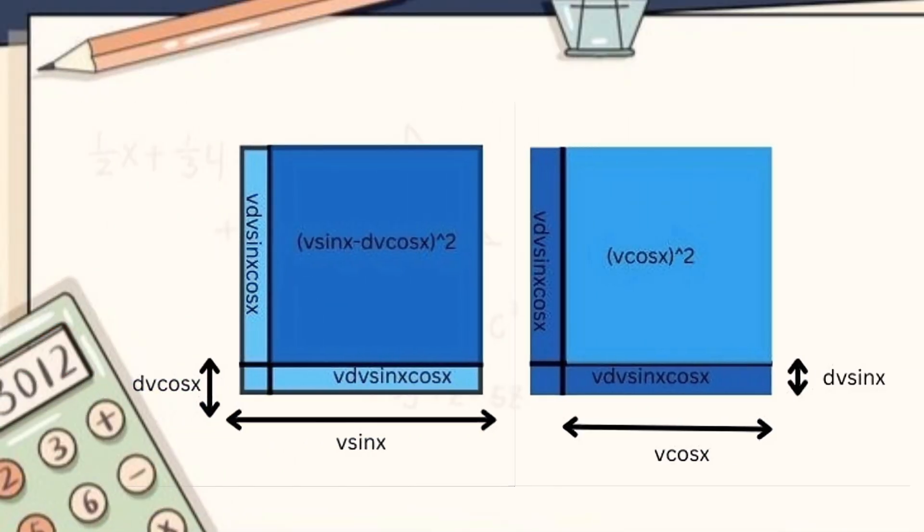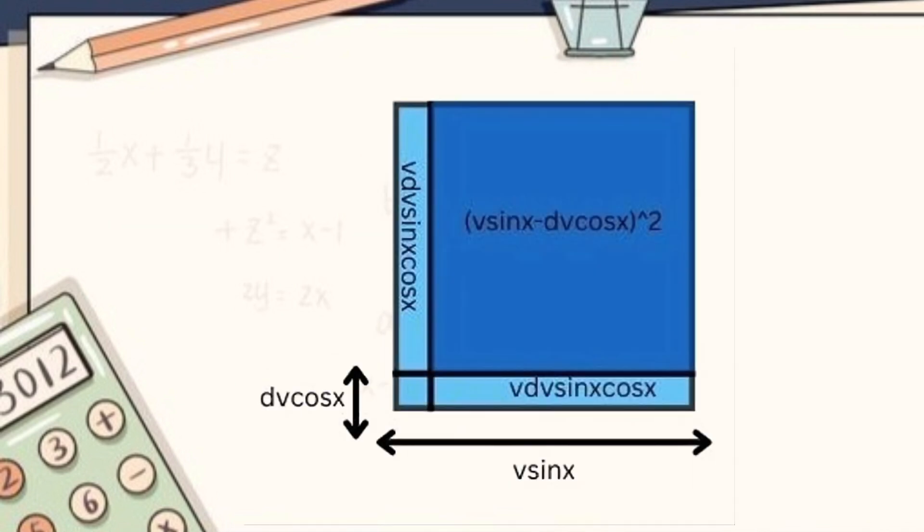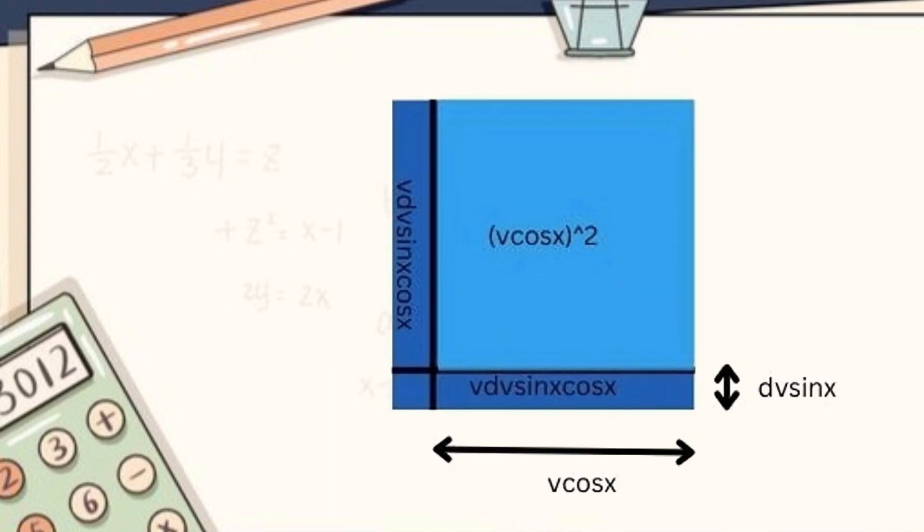We can represent this sum of squares as basically two squares whose area is being added. First square initially has a side of v sin x, and then its side is reduced by delta v cos x. Second square initially had a side length of v cos x, and then it is increased by delta v sin x.